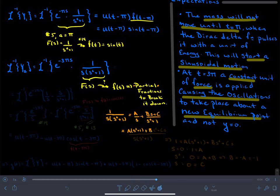So, now what this tells me is that 1 is equal to a times s squared plus 1, plus b s squared plus c s. And so, if I set s equal to 0, then I will find out that 1 is equal to a.